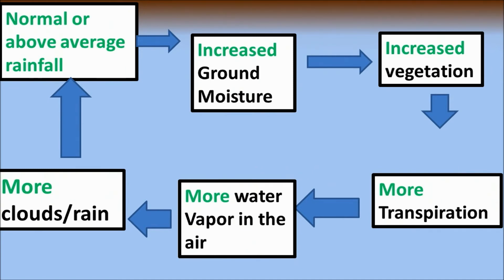But, what do you think? What's one thing that could break this loop? Take a second to think. What's something in here that would actually cause this loop to break apart and not continue? Because, normally, you would have normal rain, or above average rain, which would lead to more moisture, more vegetation, more transpiration. And, it would just increase exponentially. And, obviously, that's not going to happen.